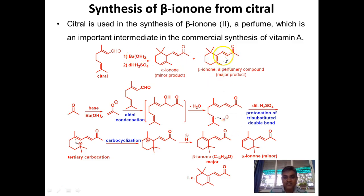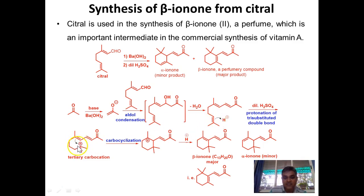The formation of beta-ionone is a very interesting reaction. In the first step, acetone undergoes aldol condensation with citral: acetone forms an enolate anion, which reacts with citral to give a beta-hydroxy carbonyl compound, and this undergoes dehydration to form an alpha-beta unsaturated ketone — forming one new carbon-carbon bond. In the second step, under acidic conditions, protonation of the trisubstituted double bond generates a carbocation, which undergoes cyclization. The tertiary carbocation can lose a proton from either side: one pathway gives the conjugated alpha-ionone system, the other gives beta-ionone, which is the major product.